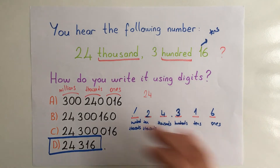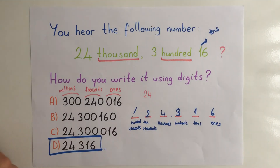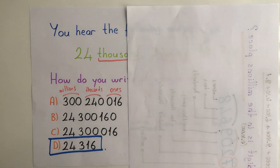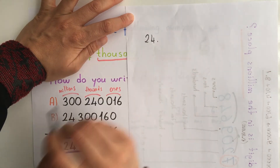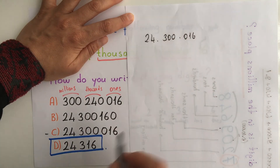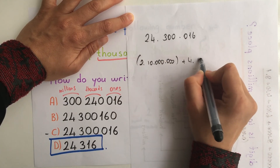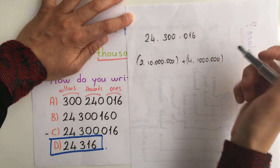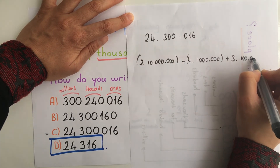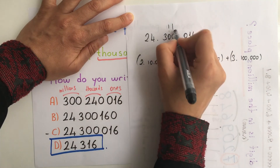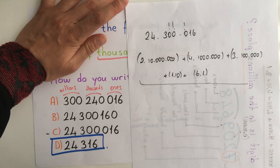Let me show you the explanation of these numbers. For the C choice it's 24 million and three hundred thousand and sixty. So it's 2 times ten million, plus 4 times million, plus 3 times hundred thousand. You don't have to write zero for ten thousand or thousand. Plus 1 times ten and 6 times one — that's the explanation of the C choice. I hope you all get it.